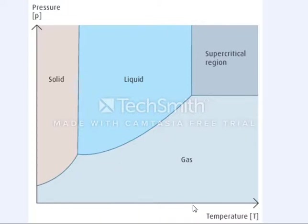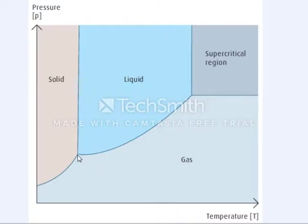Along the x-axis of the diagram we have temperature, and along the y-axis we have pressure. The triple point is right here front and center, and this is a unique temperature and pressure for each substance in which all three states of matter can simultaneously coexist. If you were slightly bumped out of this point along the temperature or the pressure, you would move into one of the surrounding phases.